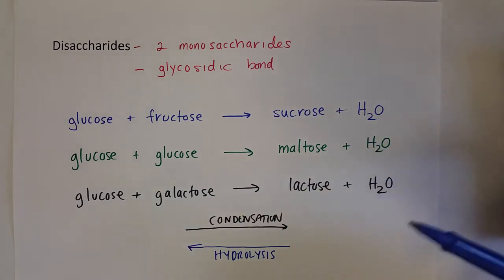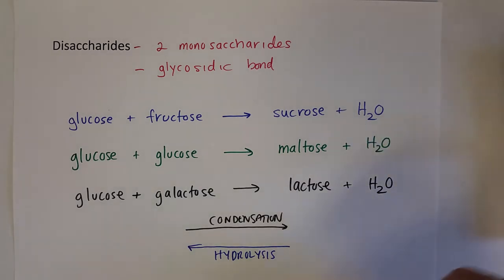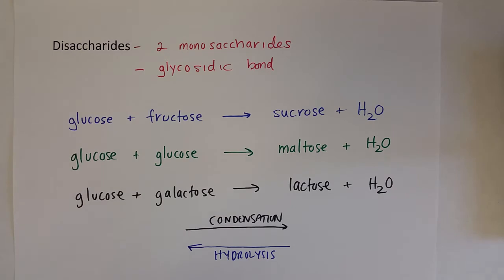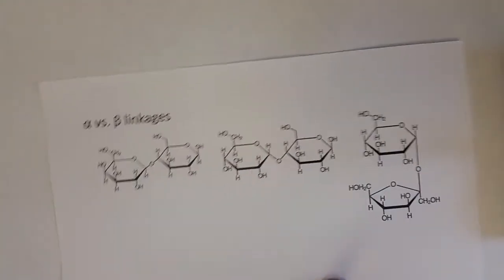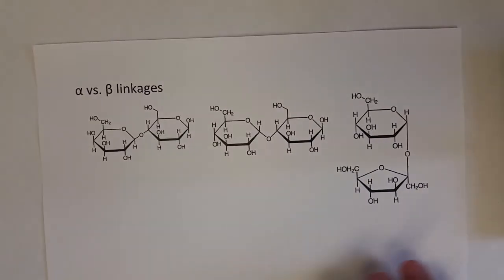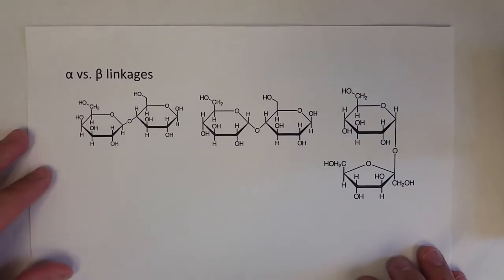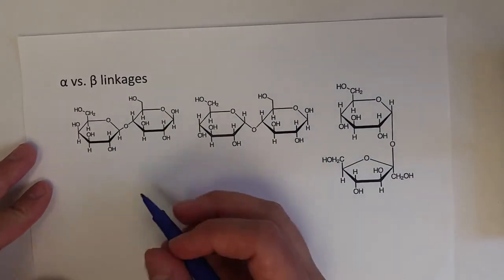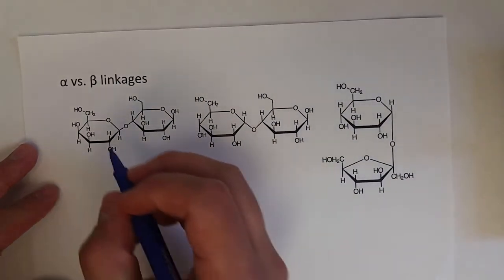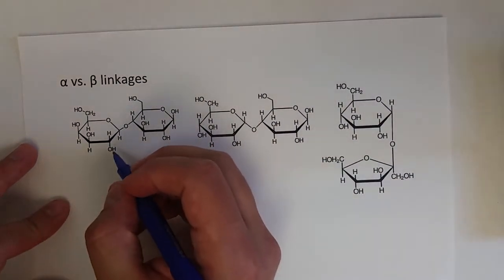A big difference between disaccharides and a very important feature is what type of bond they make, and it depends on which isomers form the linkages.